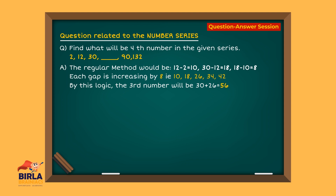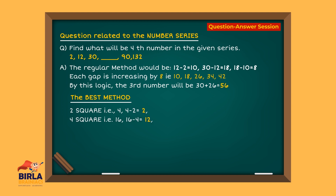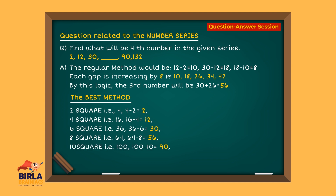Let's see what would be the best method to solve this problem. The best method would be: 2 squared is 4, 4 minus 2 is 2. 4 squared is 16, 16 minus 4 is 12. 6 squared is 36, 36 minus 6 is 30. 8 squared is 64, 64 minus 8 is 56. 10 squared is 100, 100 minus 10 is 90. 12 squared is 144, 144 minus 12 is 132.